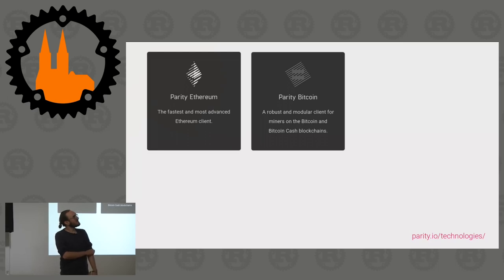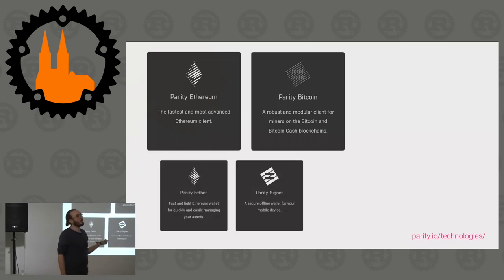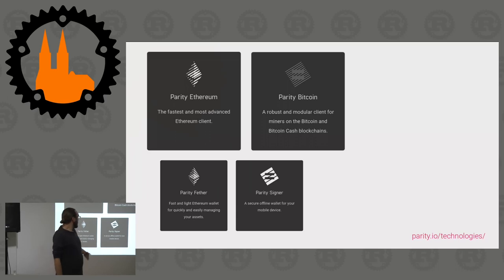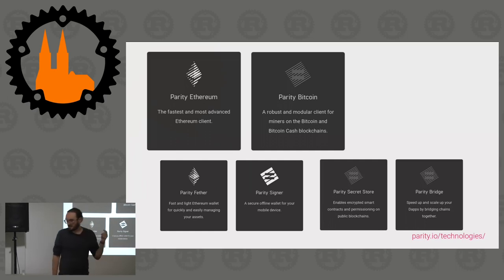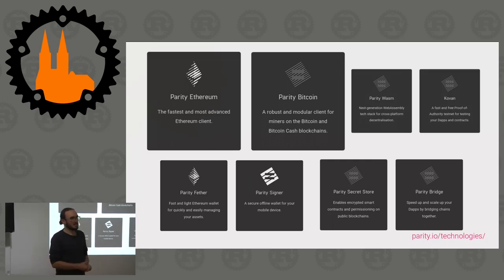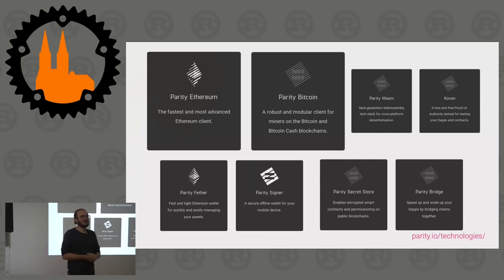We build almost everything in Rust, with some JavaScript frameworks for front-end stuff. Other projects include Ethereum wallets, offline wallets, Secret Store, the Parity Bridge compiled to EVM, and stuff that falls out of other projects that we need - one of them is our Wasm interpreter, the Parity Wasm stack, which was mentioned very often in a recent blog post about the state of Wasm.